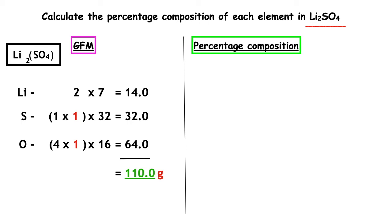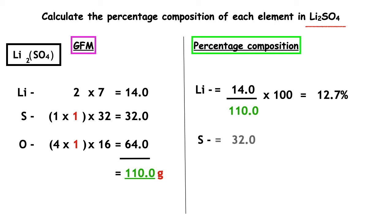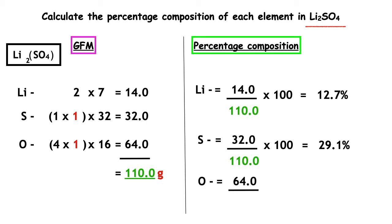To work out the percentage composition, we put the mass of that element over the GFM and multiply it by 100. For lithium, we have 14 over 110, times by 100, and we get a percentage of 12.7%. For sulfur, we have 32 over 110, multiplied by 100, which gives us 29.1%. Oxygen: 64 divided by 110, multiplied by 100, which gives us 58.2%. When we add the percentages for lithium, sulfur, and oxygen together, it equals 100%.